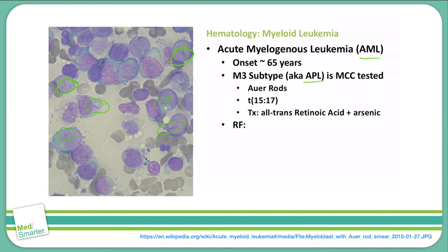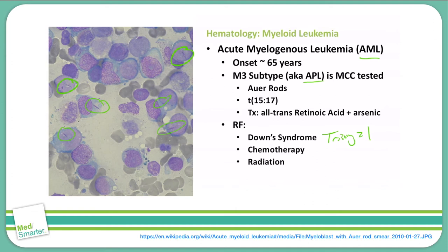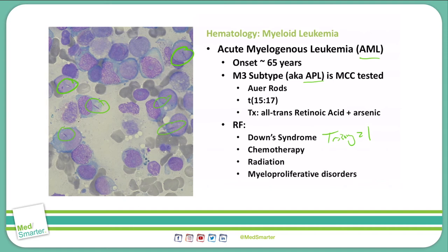Risk factors for AML include Down syndrome — trisomy 21 — as well as a history of chemotherapy, since people who have had chemotherapy in the past can develop this cancer. Radiation therapy is similarly a risk factor. If you've had a past history of radiation therapy, you can develop AML. Myeloproliferative disorders are also a risk factor for the development of AML.